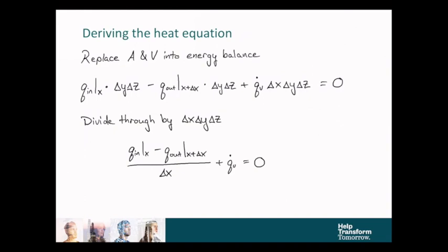So if we take the limit as delta x goes to zero, this is looking a lot like a derivative. And indeed, it's the negative derivative of q with respect to x. And when we take the limit, of course, it has no effect on qv.